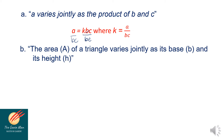The area A of a triangle varies jointly as its base b and its height h. In symbol, we have A is equal to k times b times h. Dividing both sides by bh, the constant k is equal to A all over b times h.